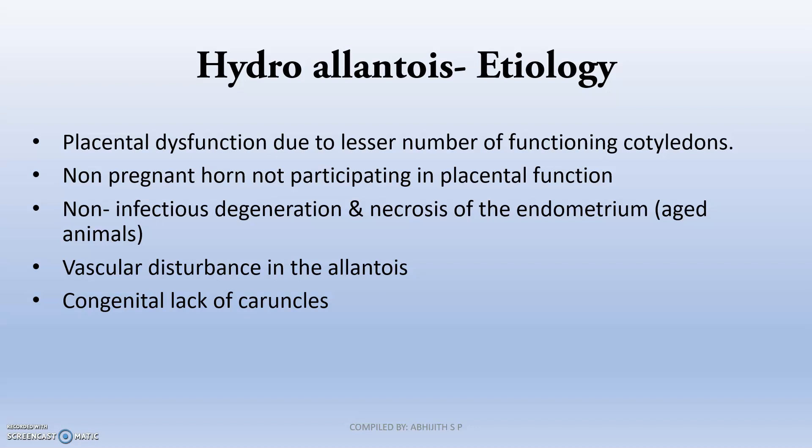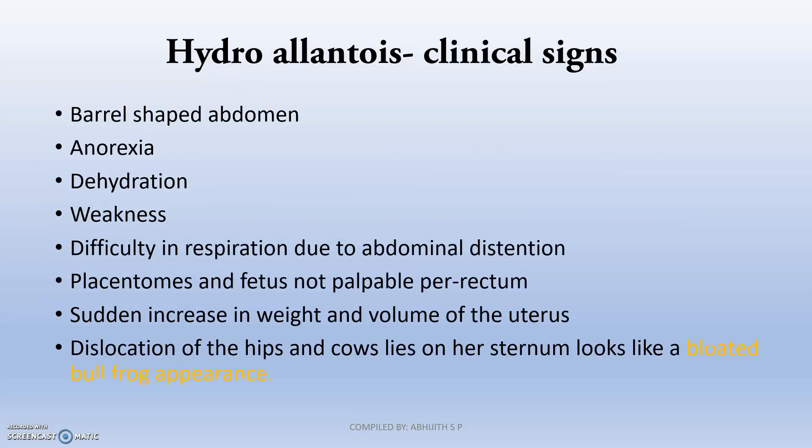Non-infectious degeneration and necrosis of the endometrium occurs in aged or geriatric animals where the endometrium does not function properly. Additional causes include vascular disturbance in the allantois and congenital lack of caruncles. Clinical signs of hydroallantois include barrel-shaped abdomen due to extension of the abdomen from the fluid-filled condition, anorexia, dehydration, weakness, and difficulty in respiration due to abdominal distension by the fluid.